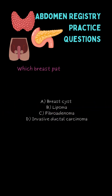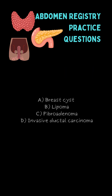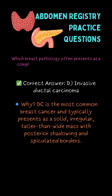Which breast pathology often presents as a complex irregular mass with posterior shadowing and angular margins? D. Invasive ductal carcinoma.